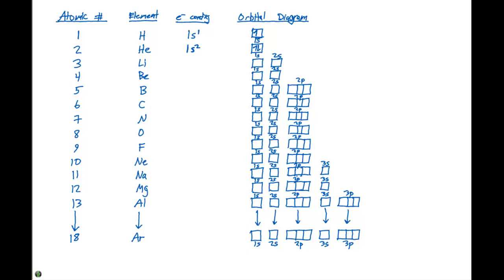When we go to lithium, we're going to completely fill up the 1s orbital with two electrons. And then next in energy is the 2s orbital, and we're going to put one electron in that orbital. So when we draw the orbital block diagram, in addition to filling up the 1s orbital, we also put an electron in the 2s orbital.